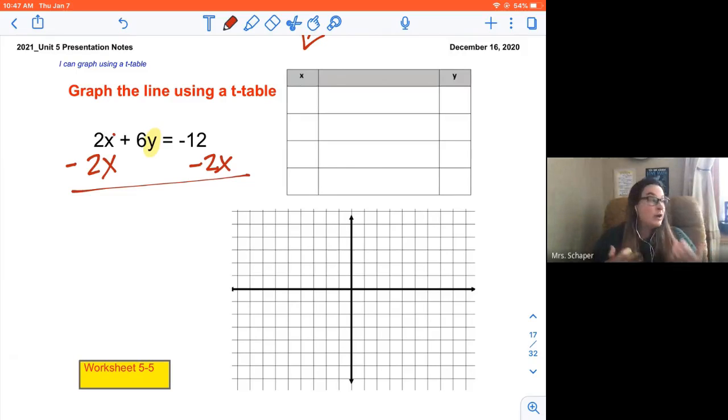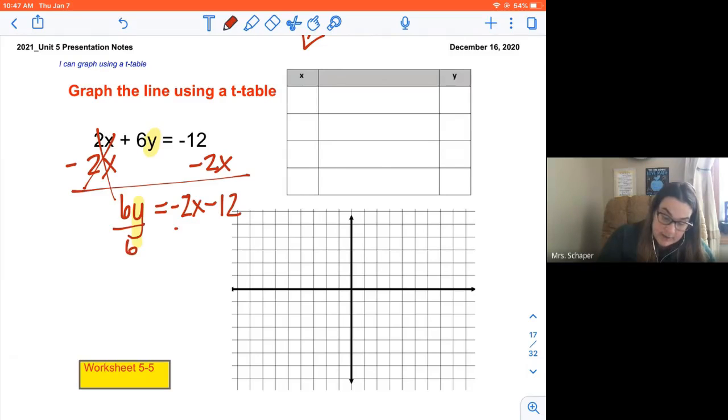It's kind of like working the equations like we did with standard form too, right? We got to get things where they belong. So I'm left with 6y = -2x - 12, and then I need y all by itself, so I'm going to divide both sides by 6.